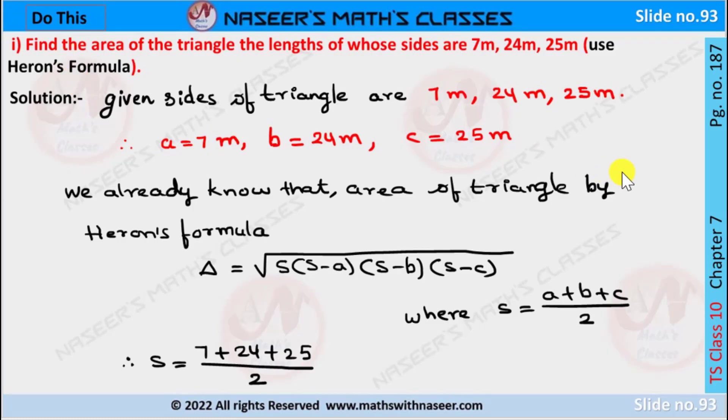Now we are going to solve Do This, page number 187, chapter 7. Find the area of the triangle the lengths of whose sides are 7 meters, 24 meters, and 25 meters.